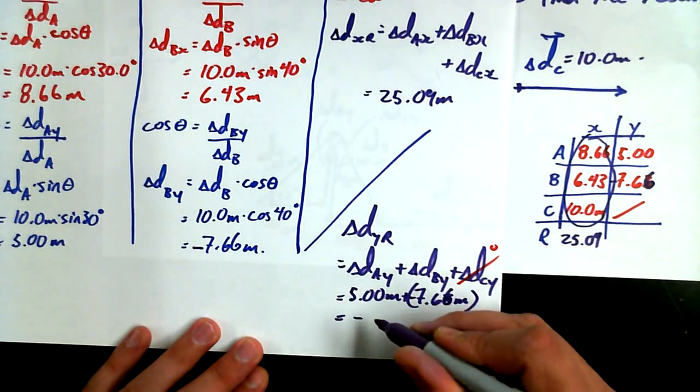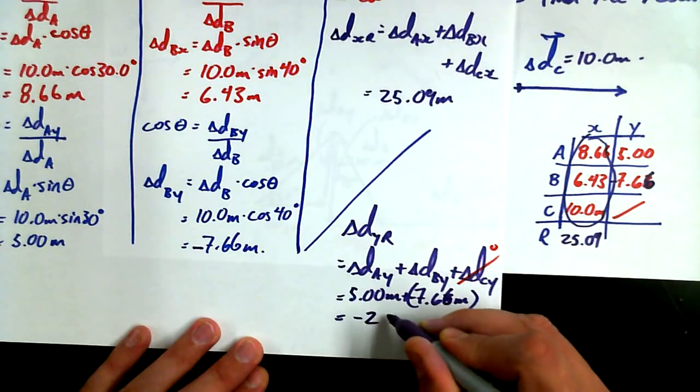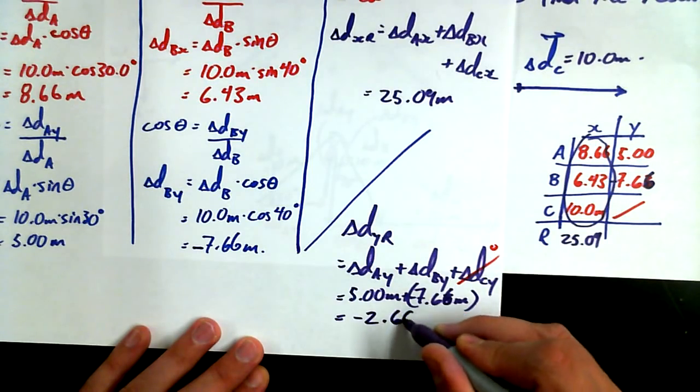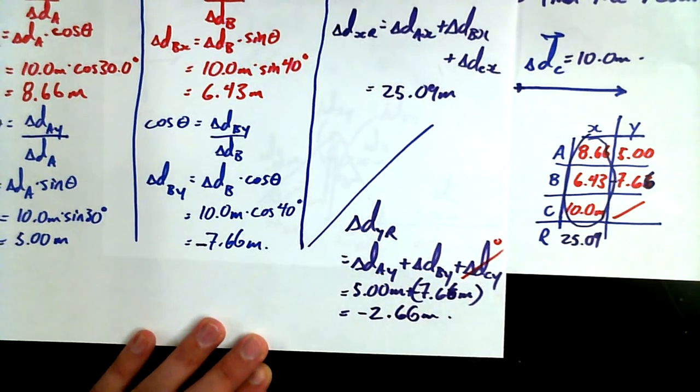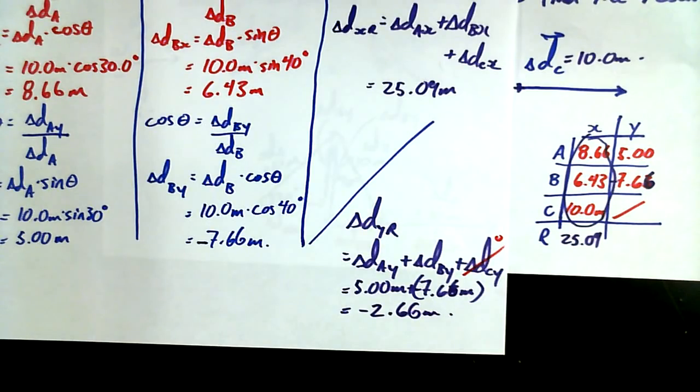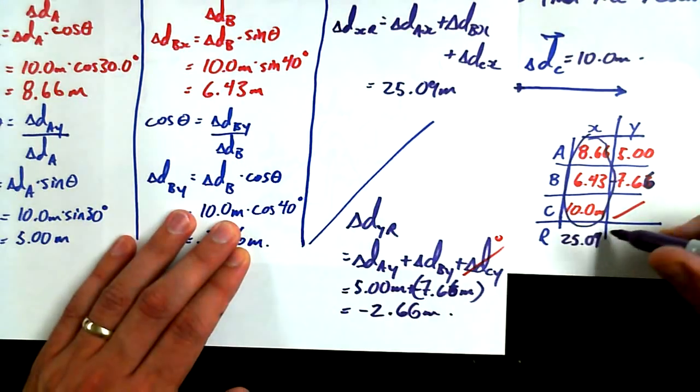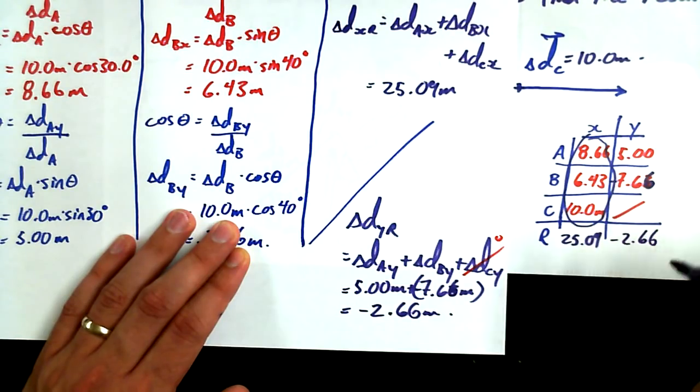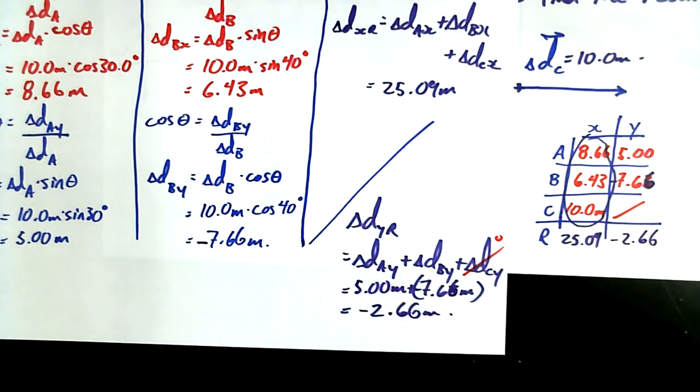When I do my resultant in the y direction, I'll write that down here. Delta dy resultant. It's going to be delta day plus delta dby plus delta dcy. Do I have to write this delta dcy? No. It's a zero value. But I like to write it because I get to stroke it out. It's good to cross it off. So 5.00 meters plus negative 7.66 meters. What do you get? Oh, you're right. 7.66 meters. Gives me what? 5 minus 7.66. Negative 2.66. Nice. Negative 2.66 meters for the displacement in the y direction. And I'll write that down in my bookkeeping section here. Negative 2.66 meters just to keep track of everything.